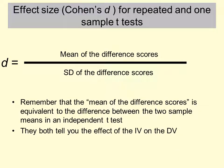Finally, Cohen's D for related samples and one-sample t-tests uses an even simpler formula: the mean of the difference scores divided by the standard deviation of the difference scores. Remember the mean of the difference scores is equivalent to the difference between the two sample means in an independent samples t-test — both are ways of telling you what the effect of the independent variable on the dependent variable is.